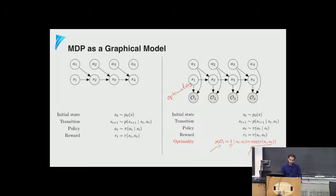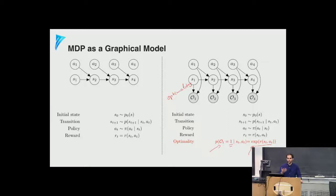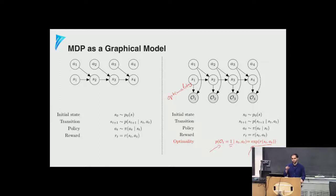A clarification: O_t is a binary random variable; the probability of O_t=1 is exp(r(s_t, a_t)). We don't directly observe optimality from the environment — rather, if we observe a trajectory from an expert and assume it is optimal, we condition on all O_t=1. We observe all states and actions, and by assumption all O_t equal one, even though they aren't directly sensed from the environment.